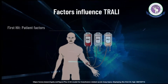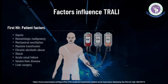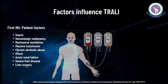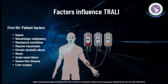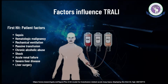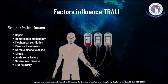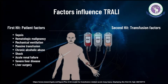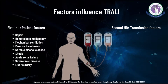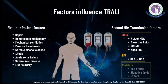Factors influencing the first hit include poor health status and underlying inflammatory diseases such as sepsis, hematologic malignancy, mechanical ventilation, massive transfusion, chronic alcohol abuse, shock, acute renal failure, severe liver disease, and liver surgery. Factors in the second hit are antibodies and biological response mediators that accumulate in blood components such as red blood cells, fresh frozen plasma, and platelets.